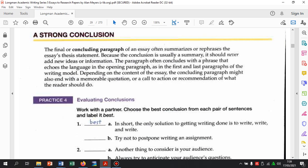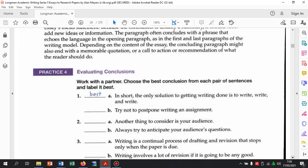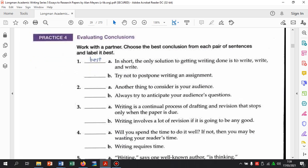That's why we call it conclusion. Contoh. We practice. Jadi, di sini ada dua jenis conclusion. Then you have to choose which one is the best one according to these sentences. Contoh. In short, the only solution to getting writing done is to write, write, and write. Yang kedua, the second one, try not to postpone writing an assignment.